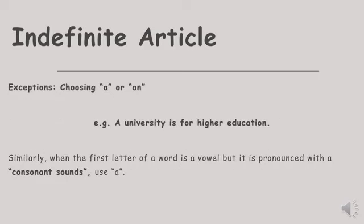See the other example: 'A university is for higher education.' Secara tulisan, kata university berawalan huruf vokal yaitu u. But why do we use article a instead of an in this sentence? Similarly, when the first letter of a word is a vowel but it is pronounced with a consonant sound, use a. Ketika sebuah kata benda berawalan huruf vokal tetapi dibunyikan dengan suara konsonan, maka gunakan artikel a.